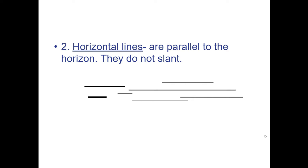Number two, horizontal lines run parallel to the horizon. They don't slant. The horizon is that space between the sky and the land. Think of a sunset on the horizon. Horizontal lines go straight across and don't slant.